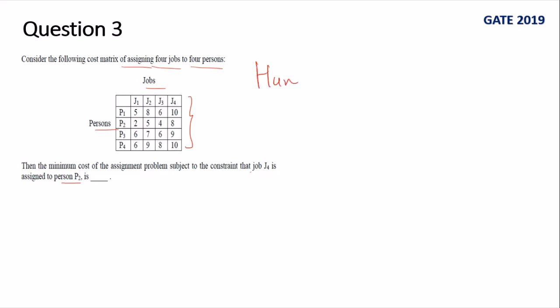The general technique which is used in these kind of questions is Hungarian method. We have to apply Hungarian method to solve this assignment problem, but this is not the ordinary question. It is coming with the restriction: job J4 is assigned to person P2. So how to incorporate this kind of restriction question?